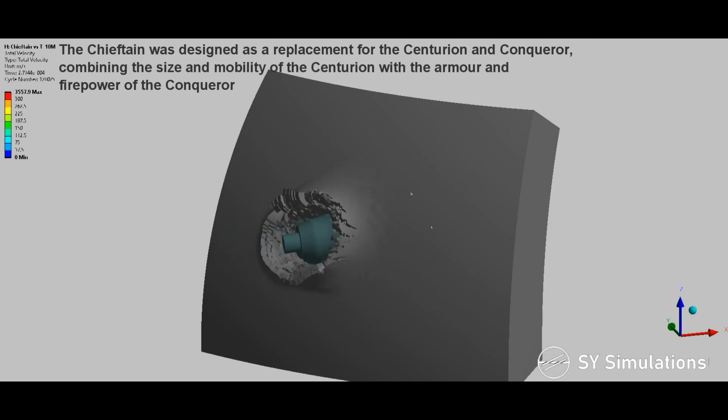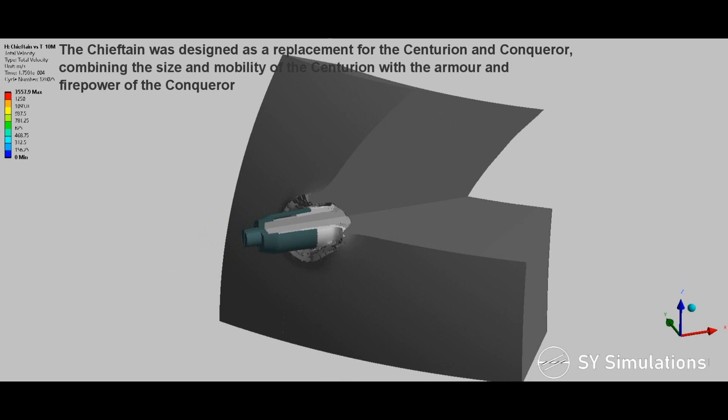The Chieftain was designed as the replacement of the Centurion and Conqueror, combining the size and mobility of the Centurion with the armor and firepower of the Conqueror.